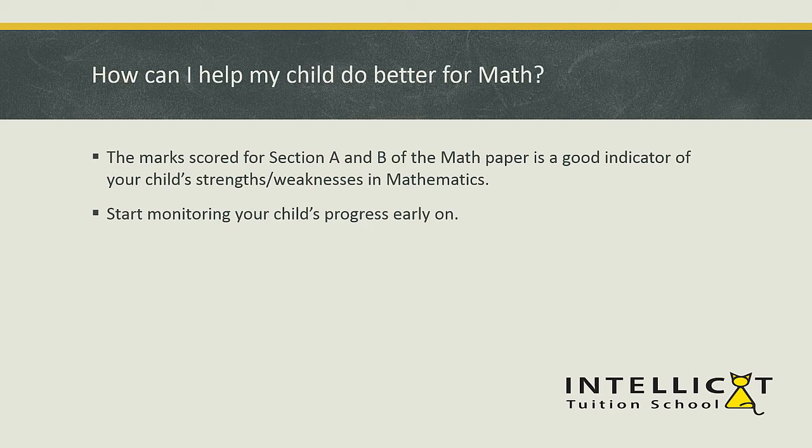For a parent whose child is just starting off in primary five, how can he or she tell if their child is fundamentally weak in maths? You can look at your child's past exam papers. If your child has been doing very well in Section A and B, it means they have pretty strong foundations, so you can let them practice more on Section C problem sums. However, if your child has difficulties with Section A and B, let your child practice more basic questions first — including concepts from primary three and two.